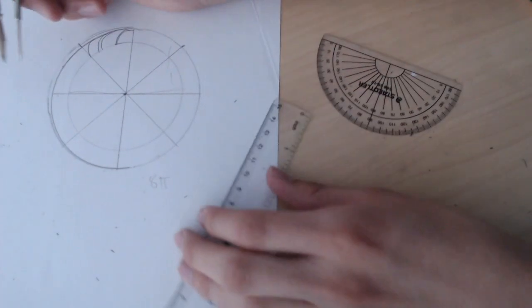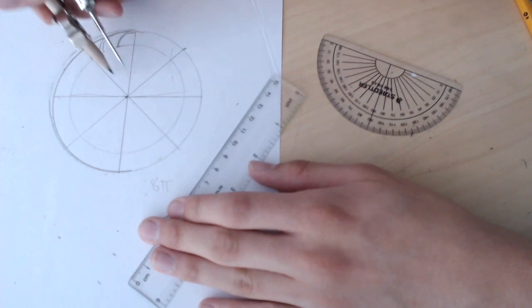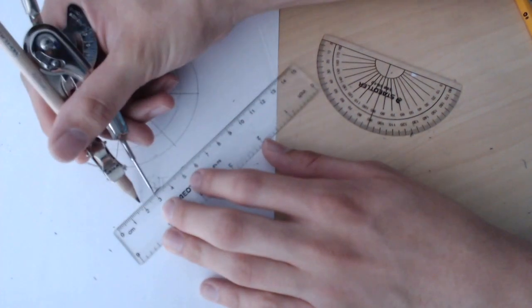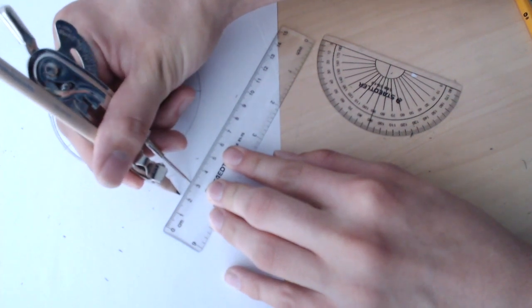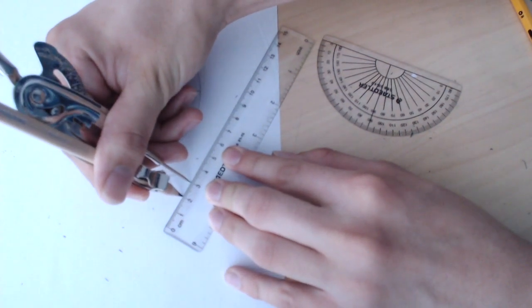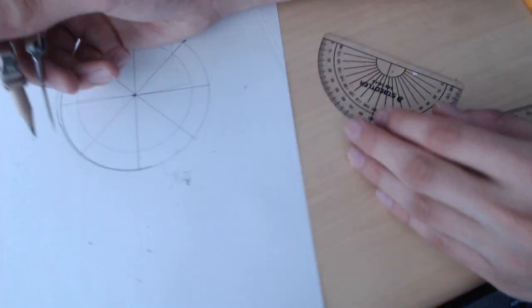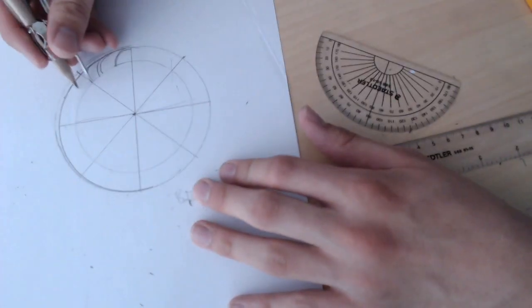One thing that I like to do is every time we reach one of these ends we check to make sure we haven't drifted our measurements out. So we check to make sure it's still one centimeter. So let's mark out the rest of this gear.